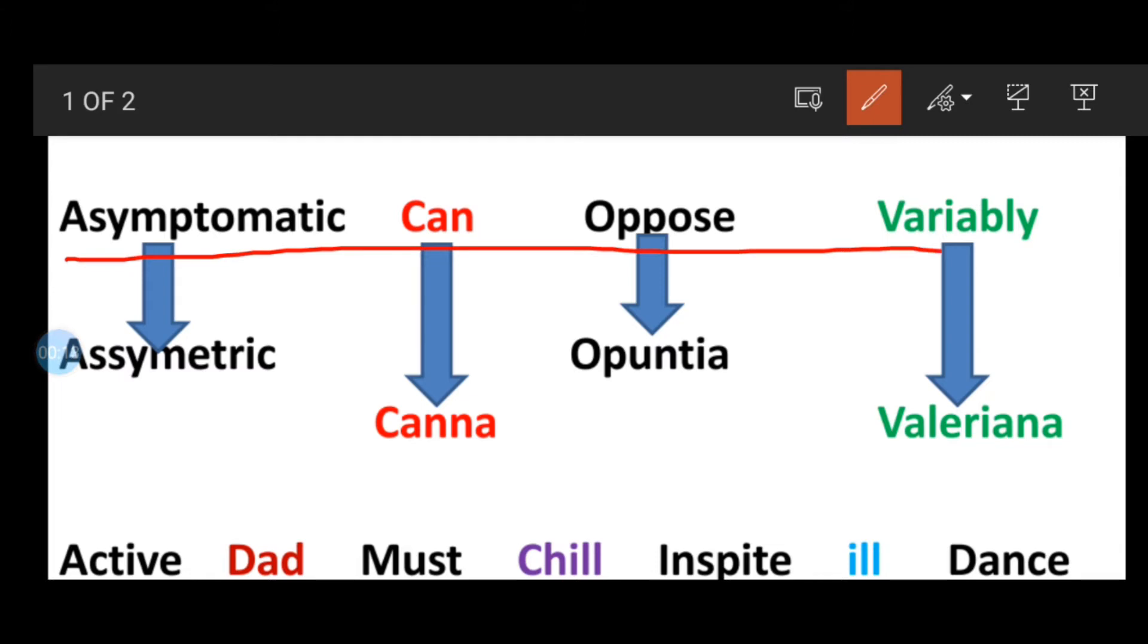Number one: Asymptomatic can oppose variably. Asymptomatic stands for asymmetric. Asymmetric means the flower cannot be divided into equal halves.